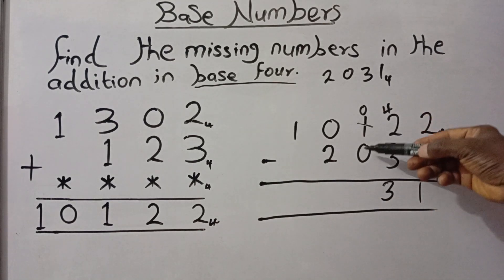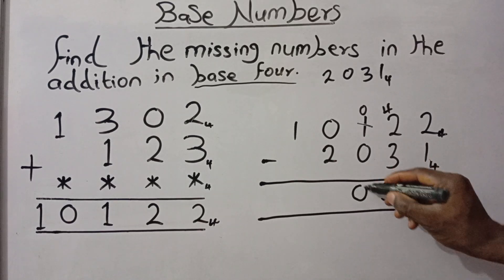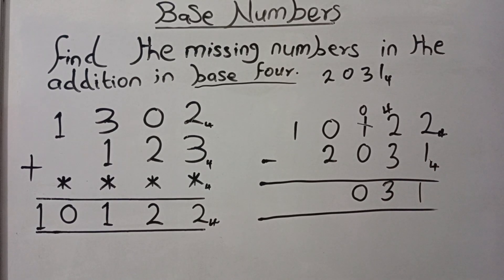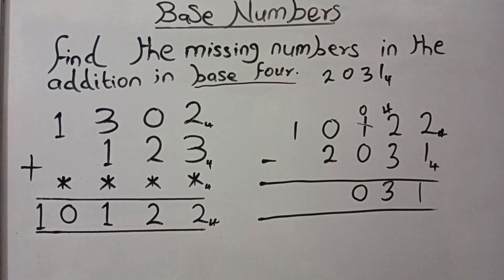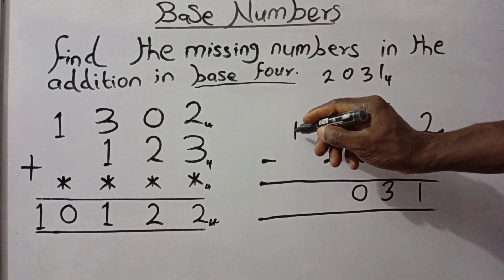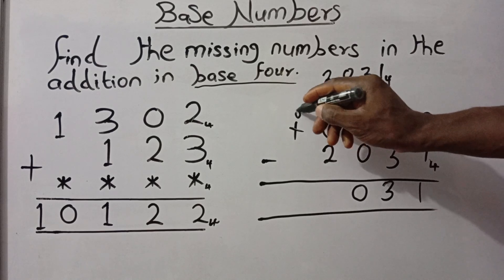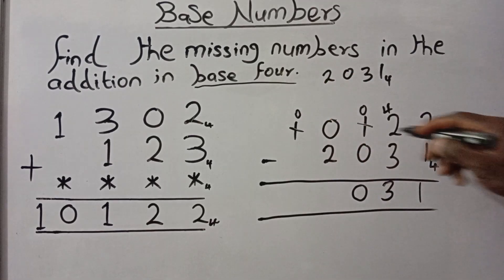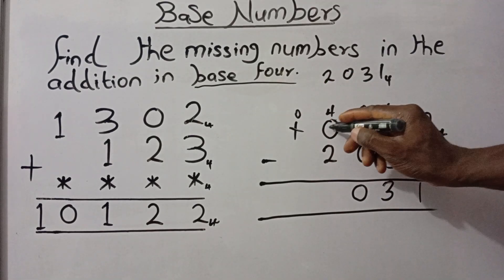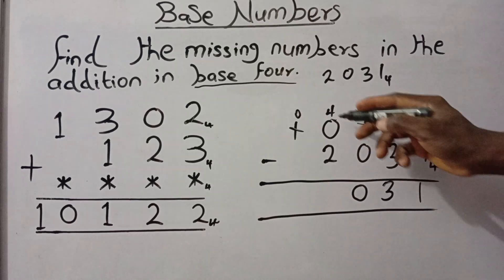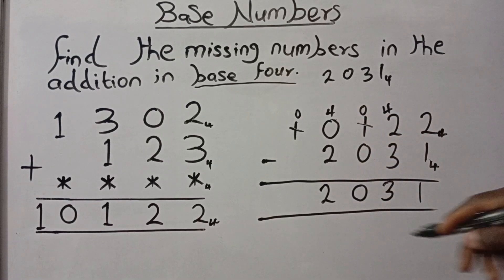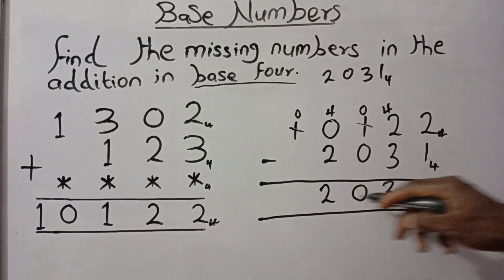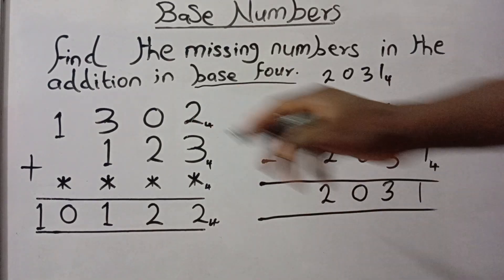Then 0 minus 2 — 0 cannot minus 2, so we have to borrow again. Remove 1 from the next column, leaving 0, and that borrowed 1 becomes 4. Then 4 plus 0 is 4, and 4 minus 2 gives 2. So this is exactly the answer to this particular question.